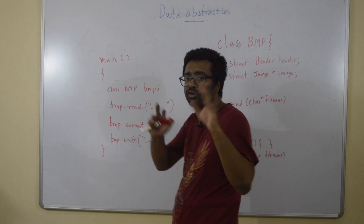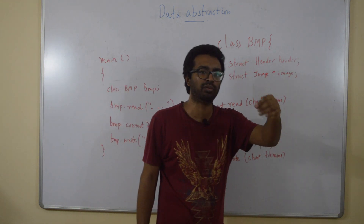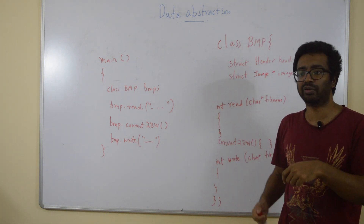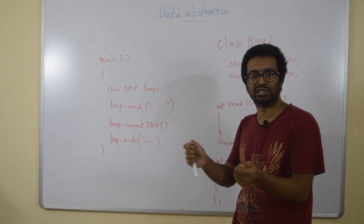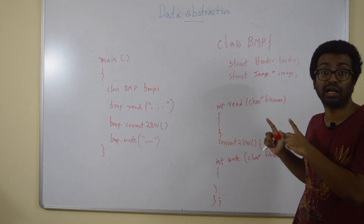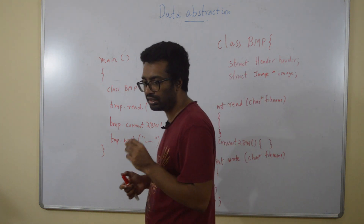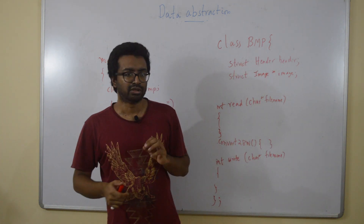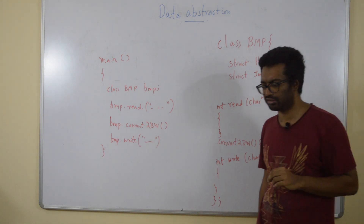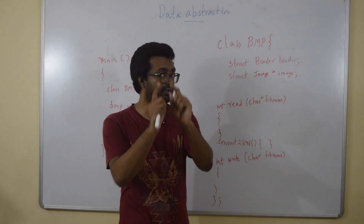There is one more thing the class writer has to do. The main user cannot know whether the image is stored as a structure, an array, or a pointer — he has no idea. Earlier, the main programmer knew it was a dynamically allocated pointer and could go to the i-th pixel and modify it. Now he does not even know what is inside the class.